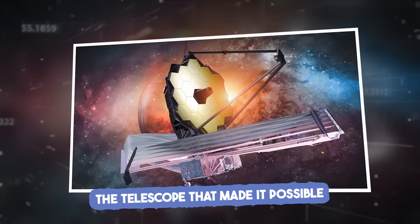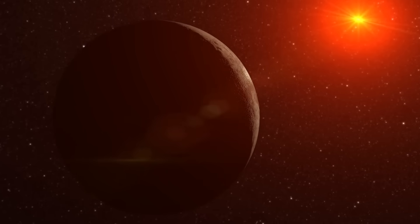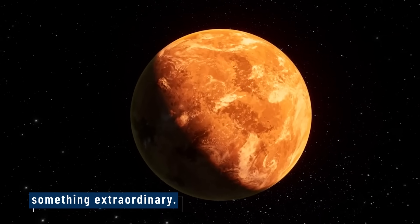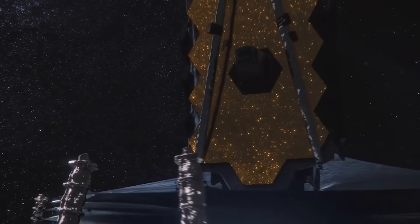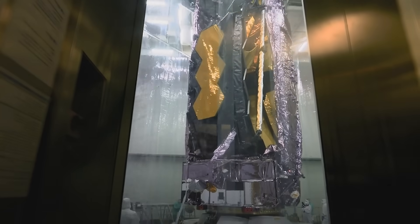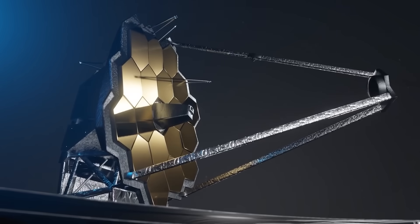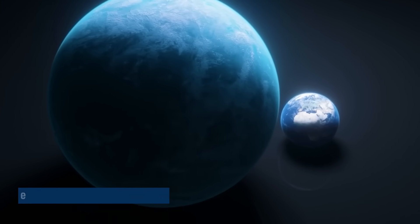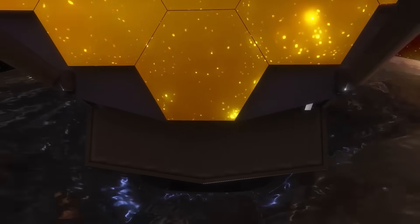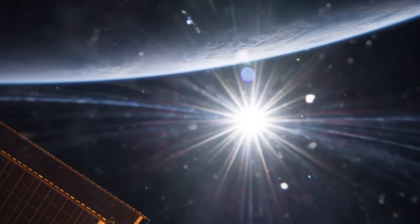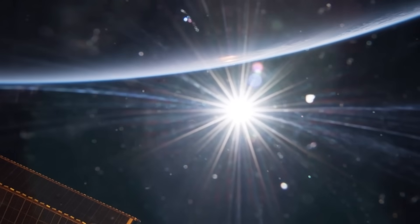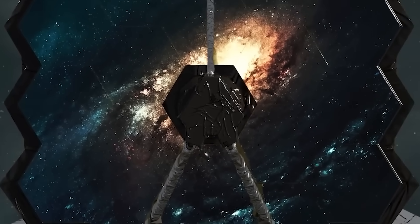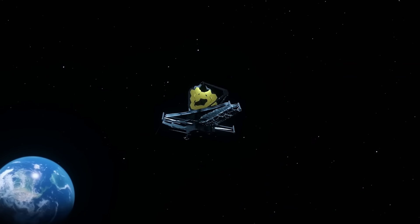To see a planet like Proxima b hiding in the blinding light of its star, you need something extraordinary. That's where the James Webb Space Telescope comes in. Launched in 2021, JWST was designed to see things we've never seen before - not just distant galaxies and newborn stars, but also nearby exoplanets. What makes it special is how it sees the universe. Unlike regular telescopes that capture visible light, Webb focuses on infrared light - heat. That lets it see through dust, gas, and glare that usually hide planets from view.